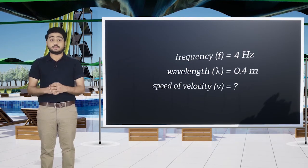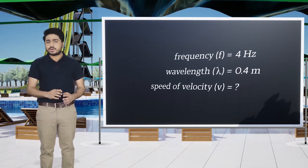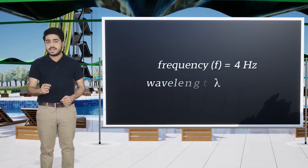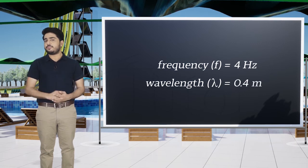The problem says that a wave moves on a slinky spring with a frequency of 4 hertz and a wavelength of 0.4 meters. We have to find the speed or velocity of the wave.